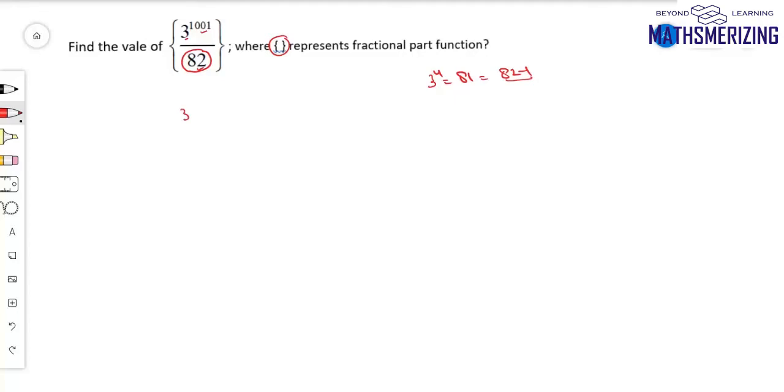I'll write 3 to the power 1001 as 3 into 3 to the power 1000, and then as 3 into 3 to the power 4 to the power 250. So the expression becomes 3 into 3 to the power 4 to the power 250, divided by 82.